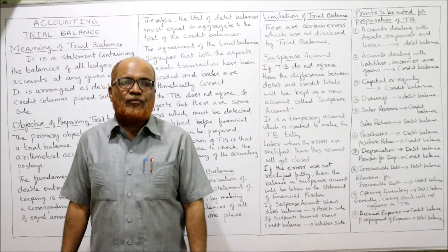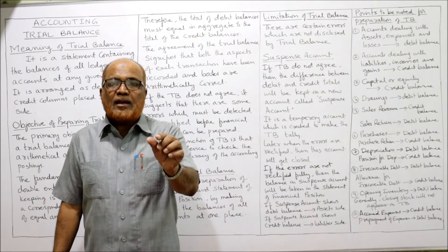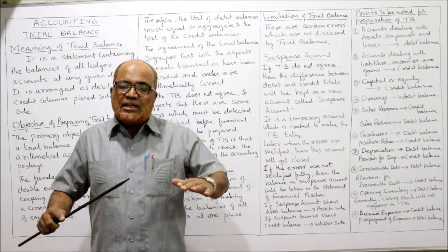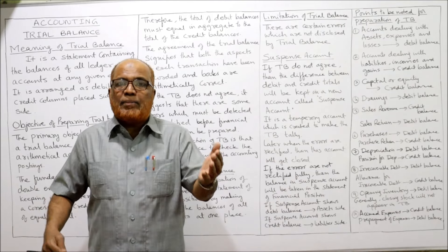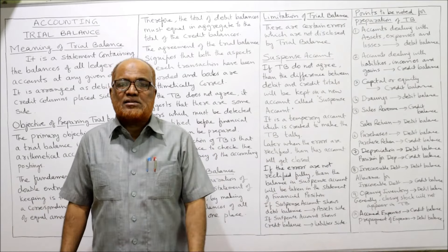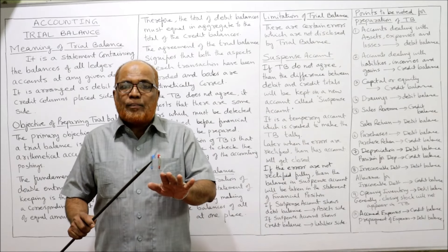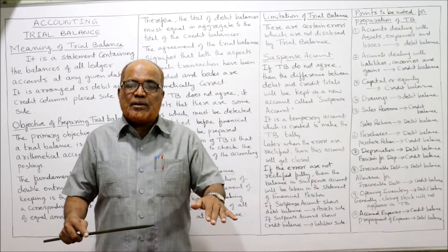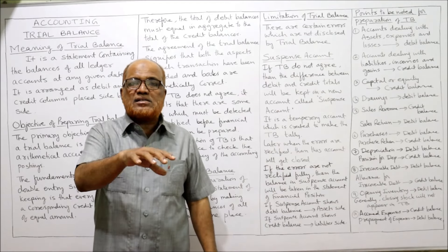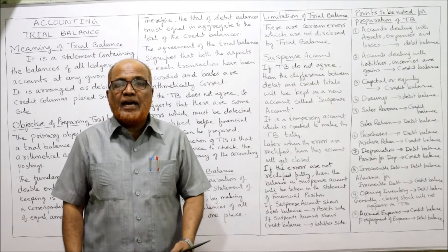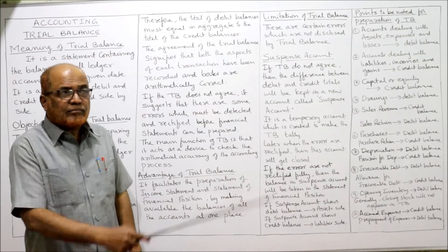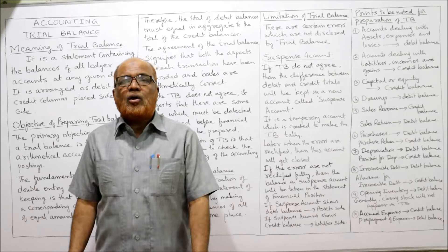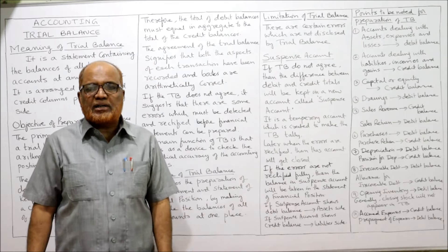The limitation of the trial balance is that it is not a conclusive proof — meaning all the errors will not be detected through it. Sometimes even when the trial balance tallies, there may still be some errors. It is not complete proof that there are no errors in the books of accounts. In simple words, all errors are not detected through the trial balance.